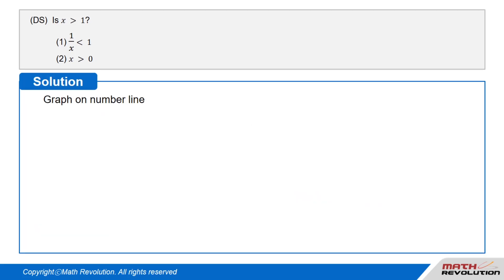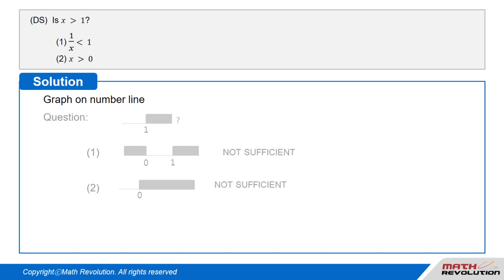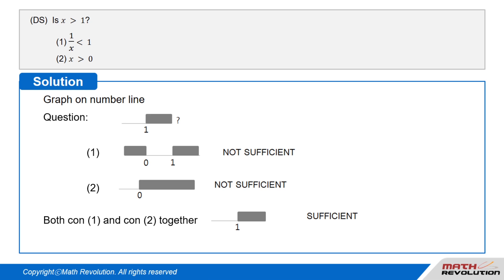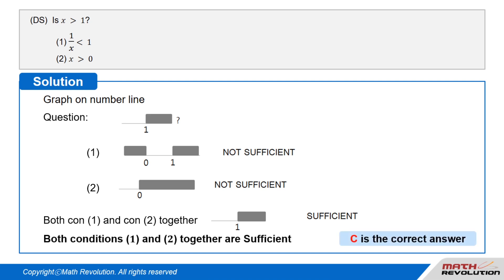Looking at the number line: the question asks is x greater than 1? Condition 1 gives x is smaller than 0 or x is greater than 1 — this is not sufficient. Condition 2 gives x is greater than 0 — this is not sufficient. Both conditions 1 and 2 together give x is greater than 1 — this is sufficient. Therefore, both conditions together are sufficient, and C is the correct answer.